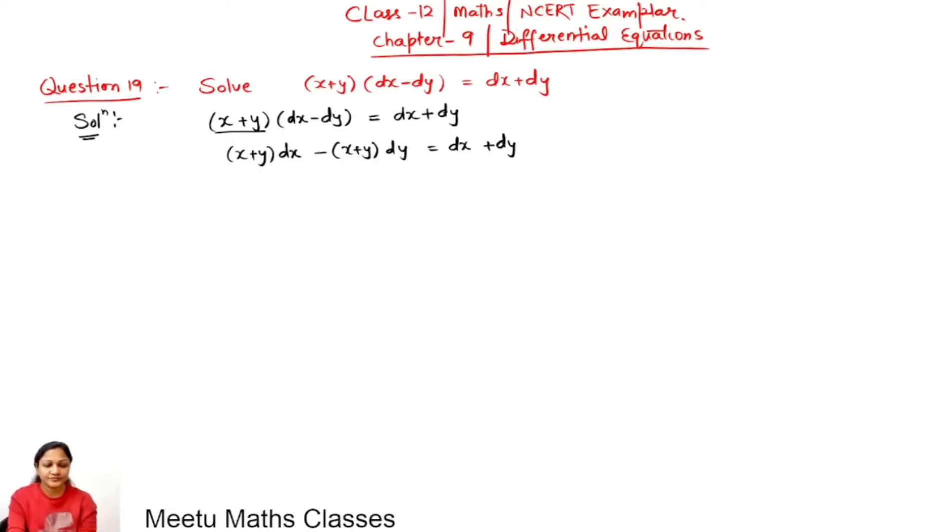Now dy can be shifted there and dx can be shifted to the left. So (x+y-1)dx equals (1-x-y) minus (x+y) will become plus (x+y)dy, and dy/dx can be written as (x+y-1) upon (1+x+y).